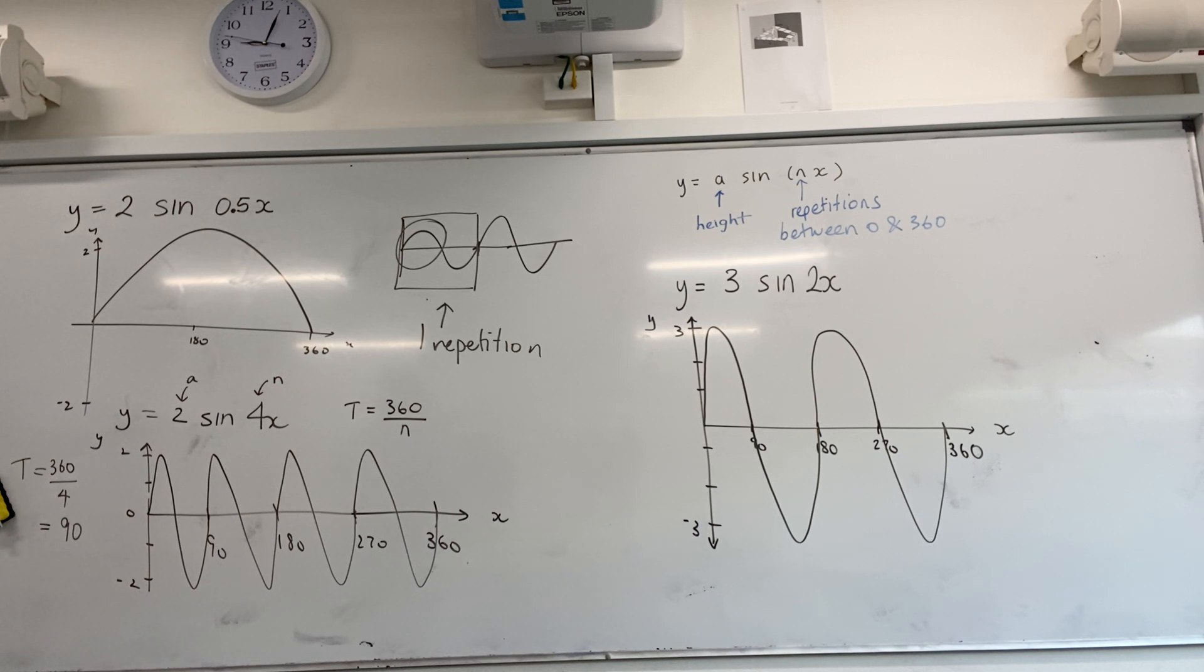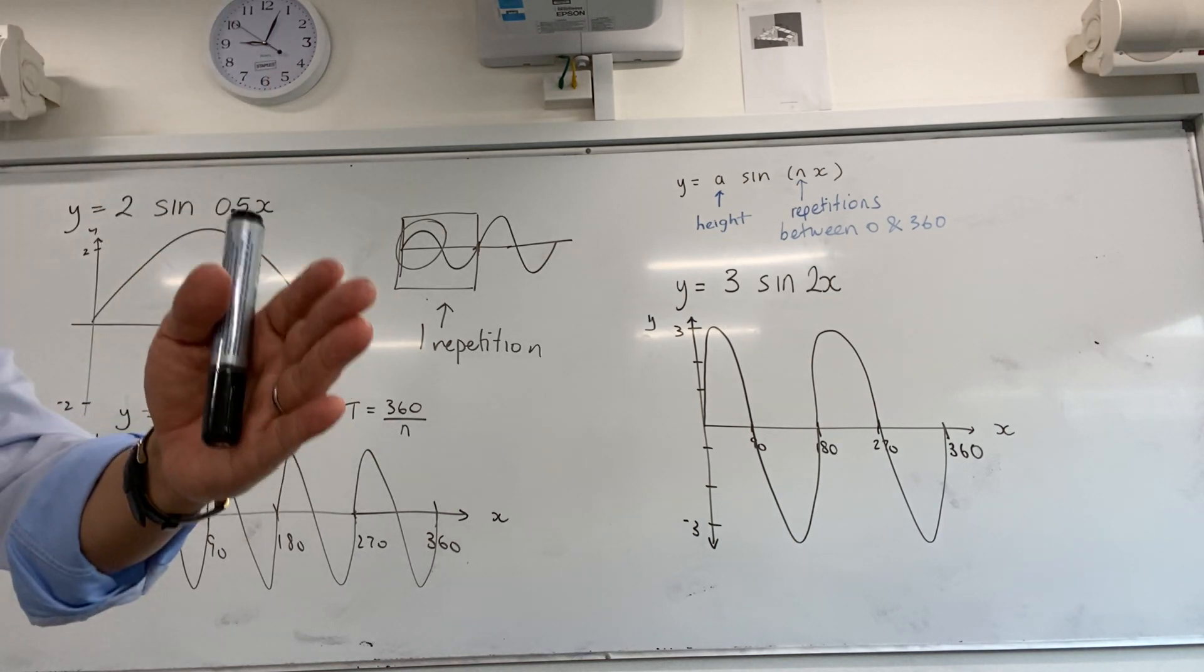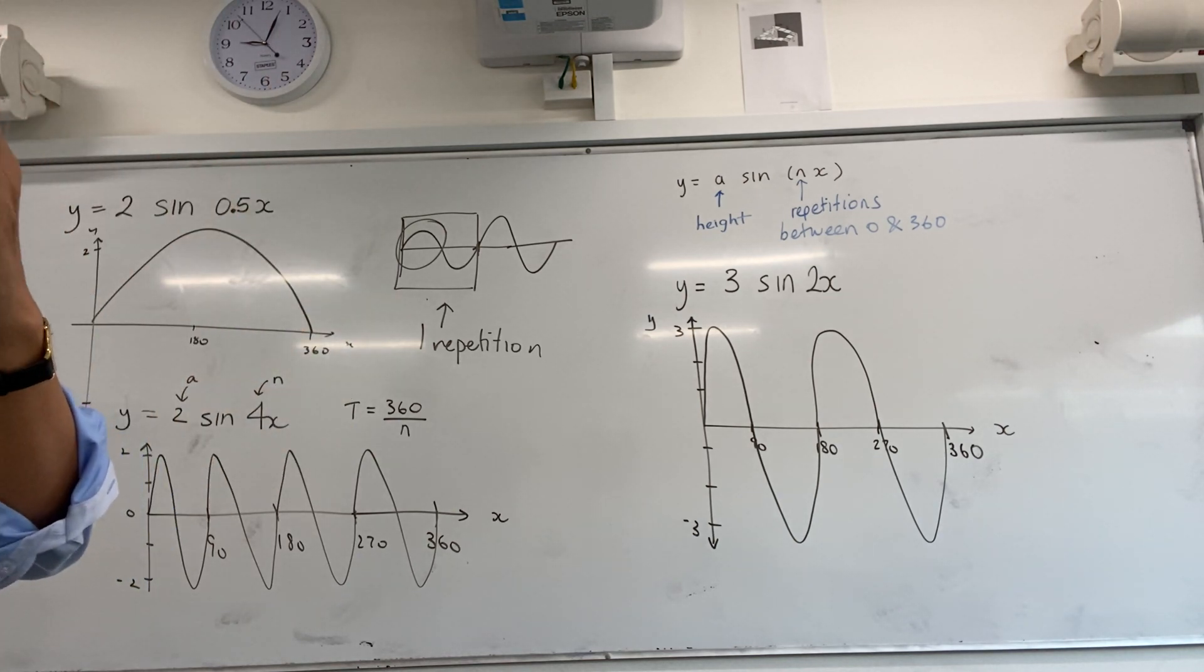So the period is how far across you need to go on the x-axis for one repetition. And then you would go, oh okay, so 180, 360, there's going to be two repetitions between 0 and 360. So they can ask in a slightly different way, but you should be able to figure out what they're trying to get.